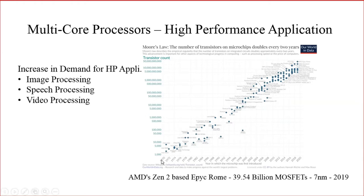From this graph we can see that in 1970, around one thousand to twelve hundred transistors were only integrated in a particular chip. By around 2000, one crore ICs were integrated into the chip, and by around 2018–2020 you can see that around 50 billion transistors will be incorporated into a single microprocessor IC.